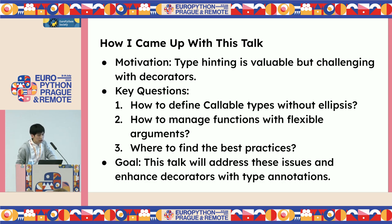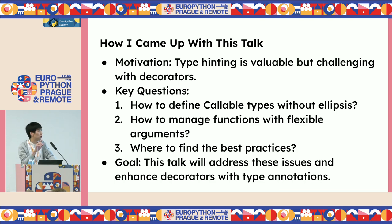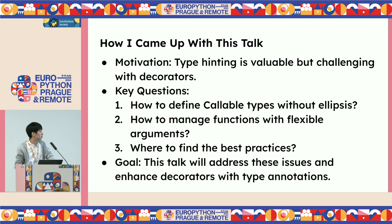The first topic is how I came up with this talk — the motivation. Type hinting is very valuable, but it's challenging with decorators. The key questions are: how to define the decorator type without ellipsis, how to manage functions with flexible arguments, and sometimes the decorator changes the argument meaning. I feel it's difficult to find best practices for decorators and callbacks. Today I will address this issue and enhance the decorator with type annotation.